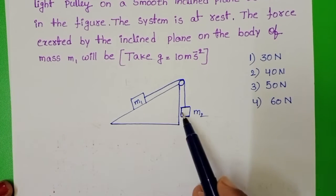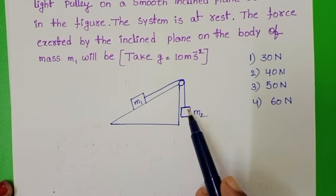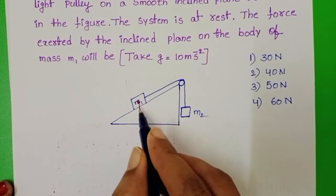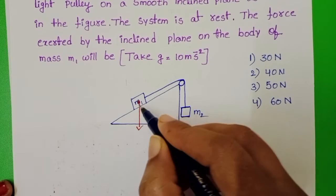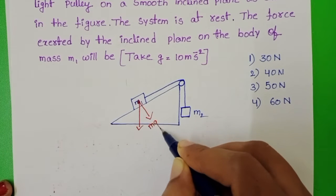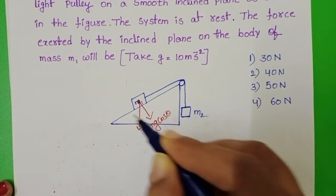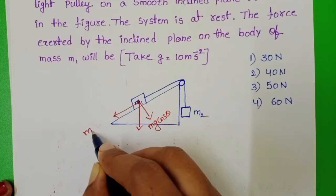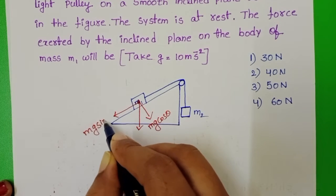These two blocks are connected with the help of a string and this system is at equilibrium position. Weight of this block is resolved into two rectangular components: along this direction Mg cos theta and along the inclined plane in downward direction Mg sin theta.